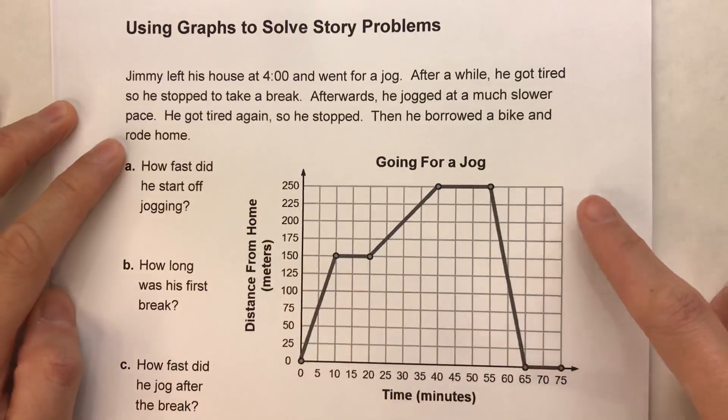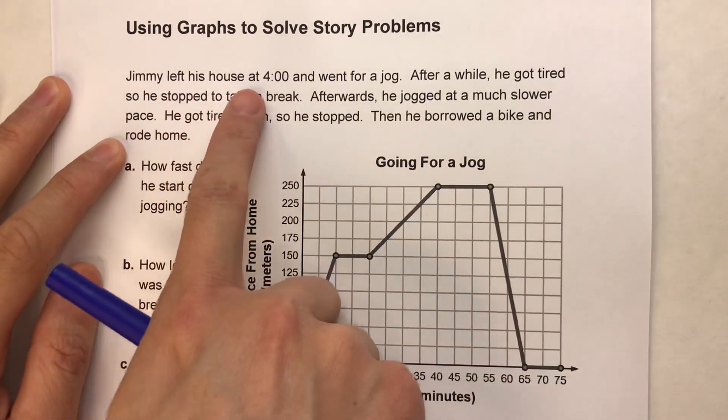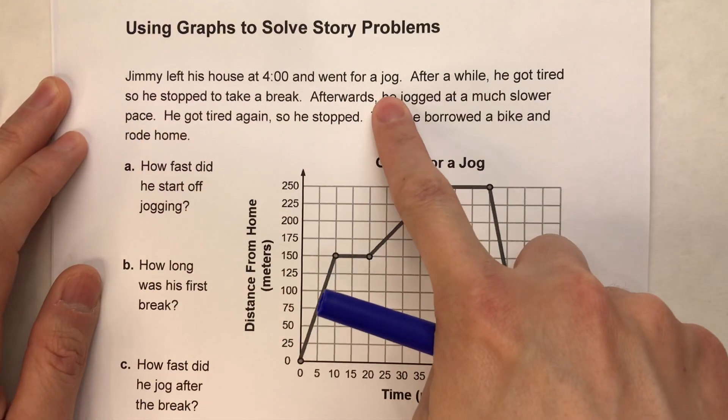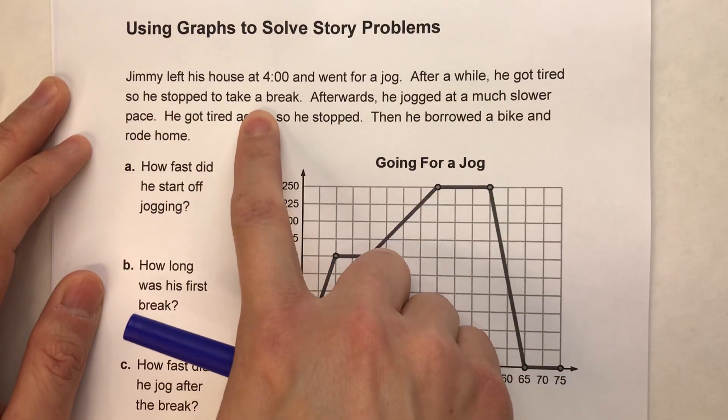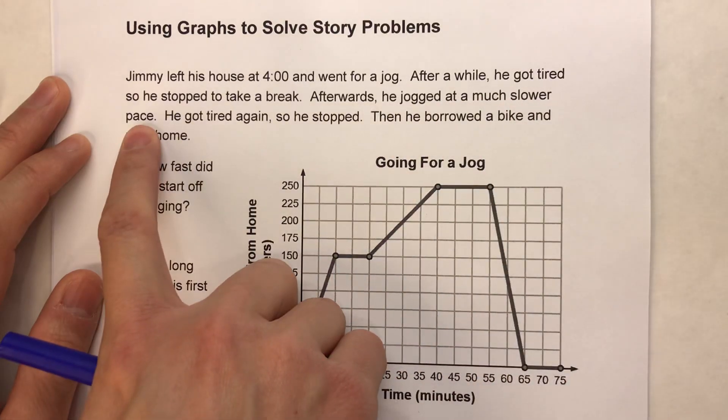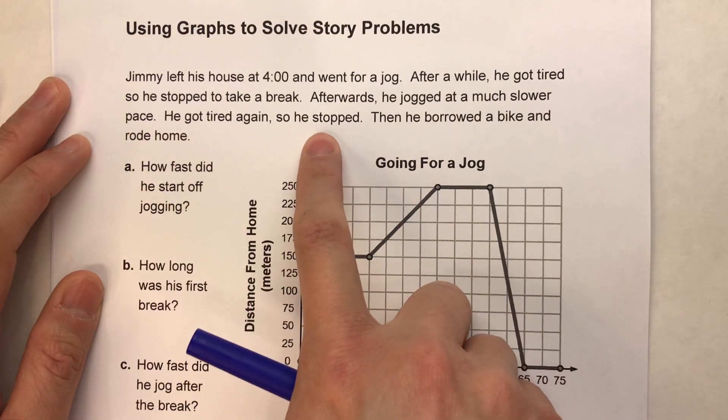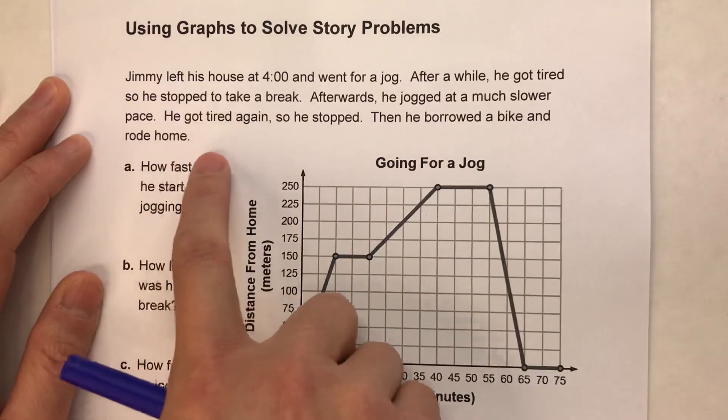Alright, so here's the scenario. It says Jimmy left his house at 4 o'clock and went for a jog. After a while, he got tired so he stopped to take a break. Afterwards, he jogged at a much slower pace. He got tired again so he stopped. Then he borrowed a bike and rode home.